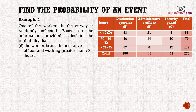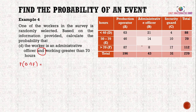Calculate the probability that the worker is an administrative officer working greater than 70 hours, i.e., P(B∩F). From the table, the intersection of administrative officer (B) and greater than 70 hours (F) is 8, so P(B∩F) = 8/270, which simplifies to 4/135.